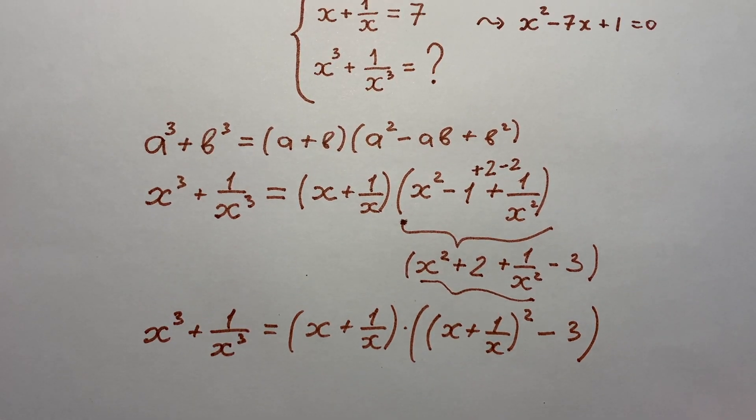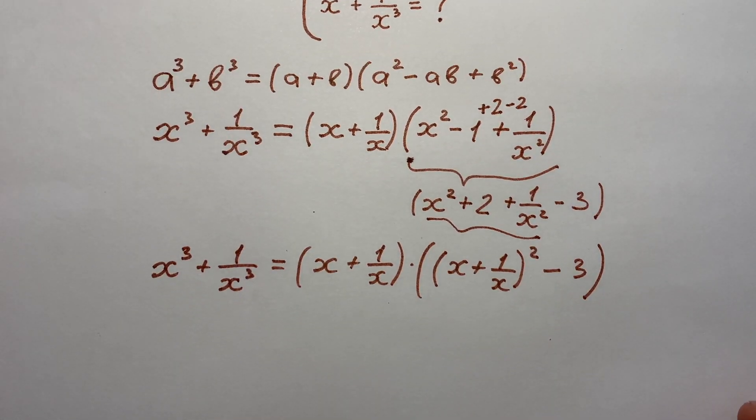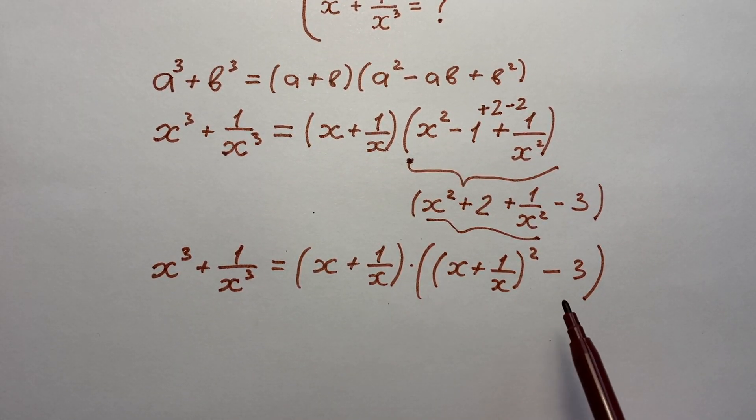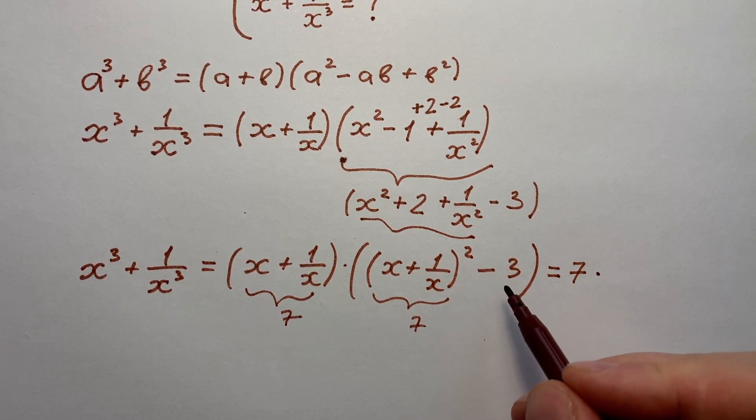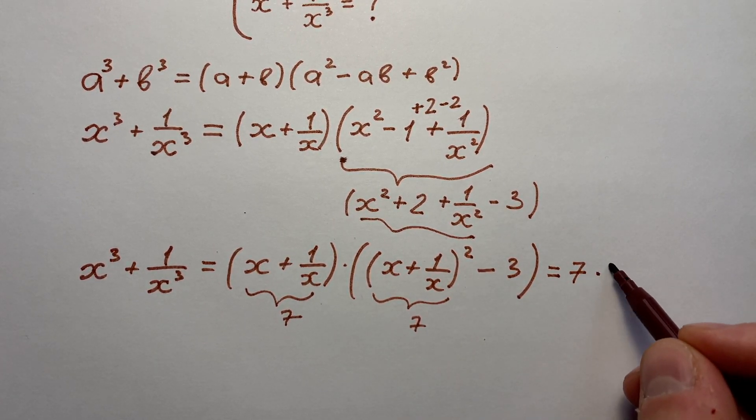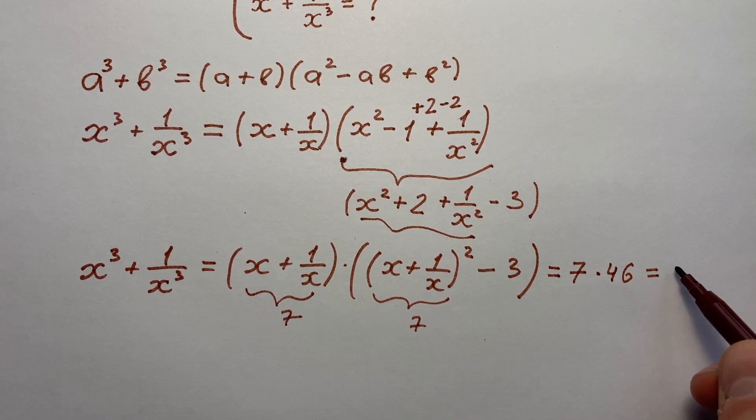x + 1/x = 7. So putting it into these products we can finally get 7 times 7² - 3 equals to 7 times 46. And it equals to 322.